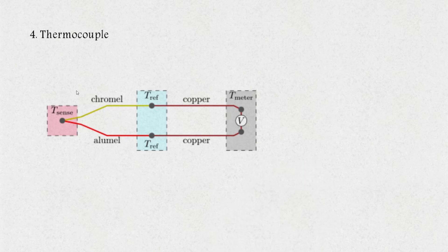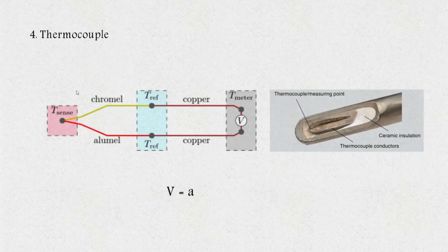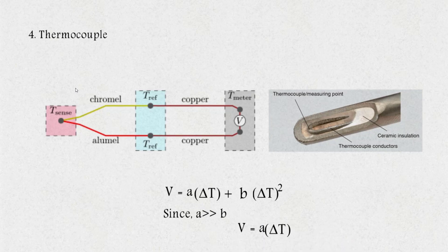Next, we have thermocouple. When two metals of different work functions are placed together, a potential generates between them which is nearly proportional to the temperature. A thermocouple works on the same principle. A times change in temperature plus B times the square of change in temperature. Here, delta T is temperature difference between the hot thermocouple junction and the reference junction. Since A is very very greater than B, we can write B equals A.